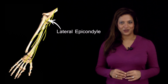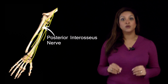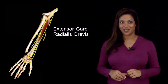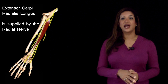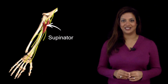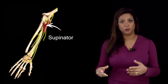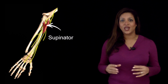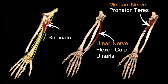In front of the lateral epicondyle, the radial nerve gives off a very important branch: the posterior interosseous nerve. It is the posterior interosseous nerve that supplies extensor carpi radialis brevis, while extensor carpi radialis longus is supplied by the radial nerve itself. Notably, all three nerves entering the forearm — the median nerve, ulnar nerve, and radial nerve (via the posterior interosseous nerve) — each pass between two heads of a muscle: the median between the two heads of pronator teres, the ulnar between the two heads of flexor carpi ulnaris, and the radial between the two heads of supinator.